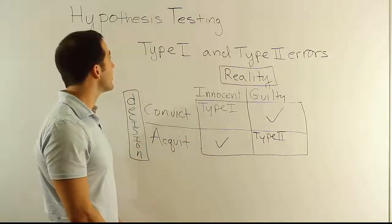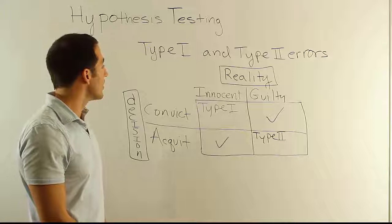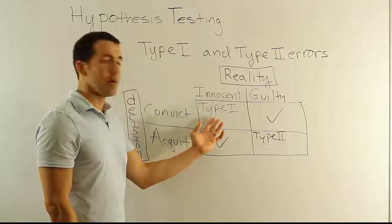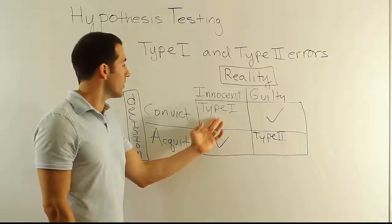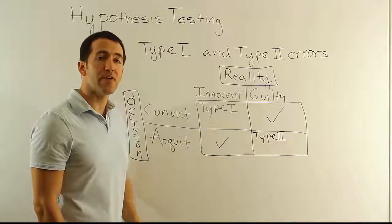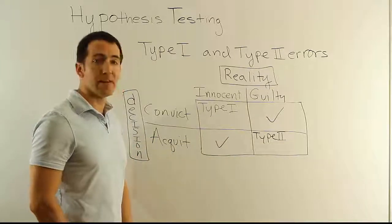Alright, so that's basically the concept of Type I and Type II error. We're going to talk about how to control the probability of this Type I error and how that relates to something later called the critical value. We'll do that in the next couple of videos.